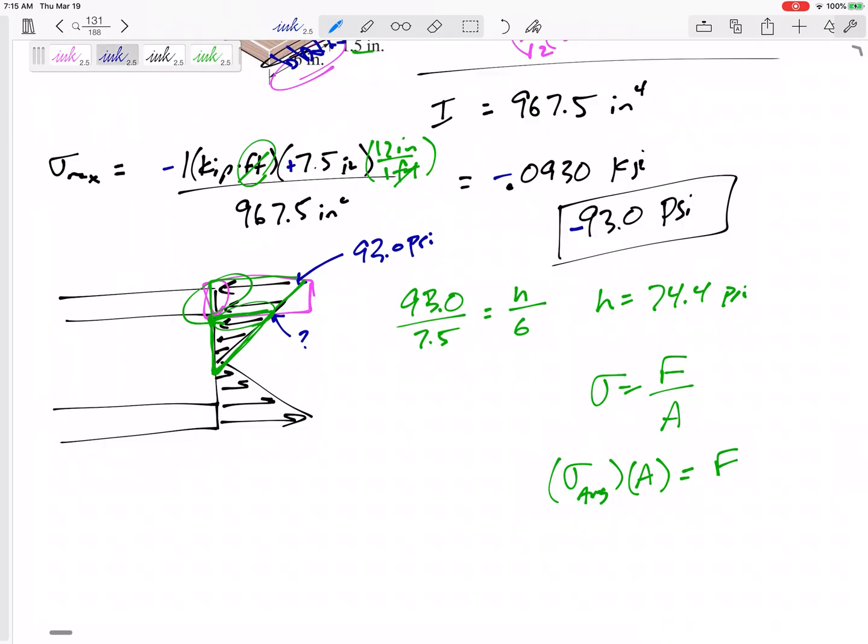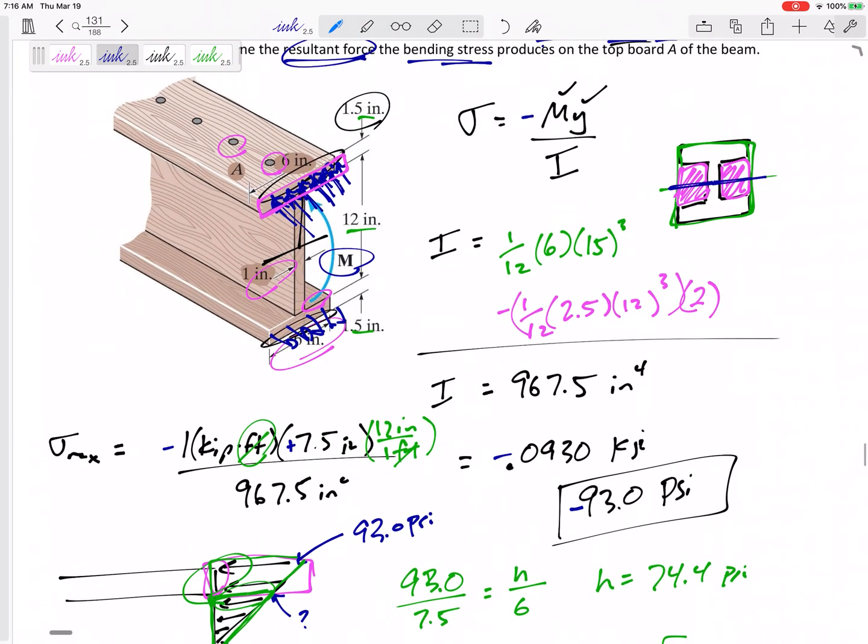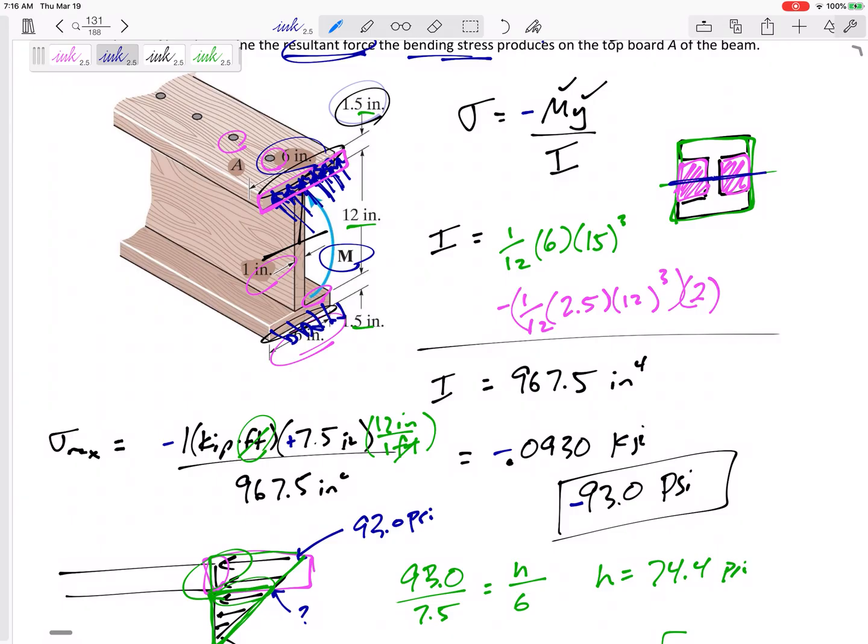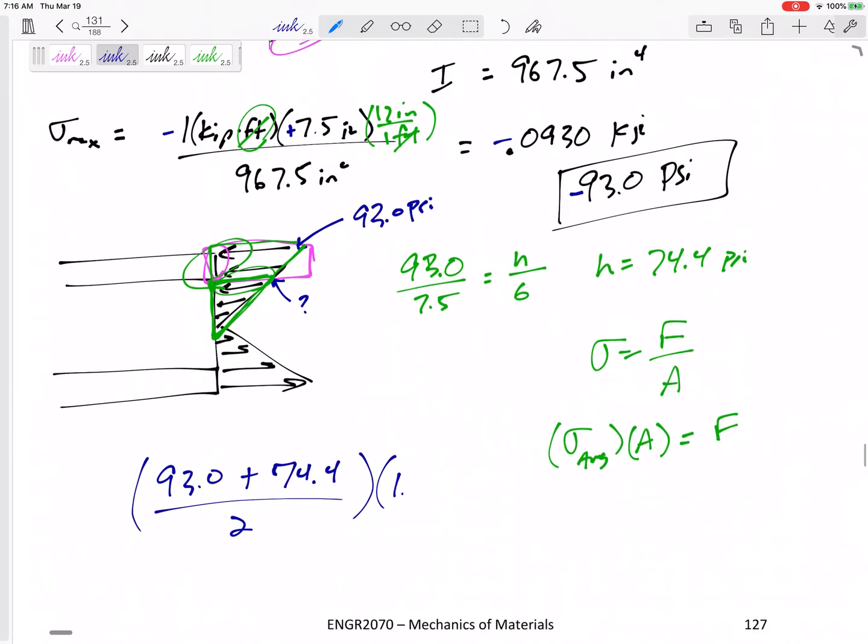So the average, 93 and 74.4. And the cross sectional area of that top beam, 1.5 by 6. Alright, 753 pounds is what I've got.